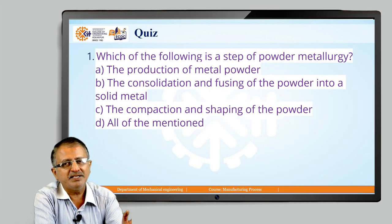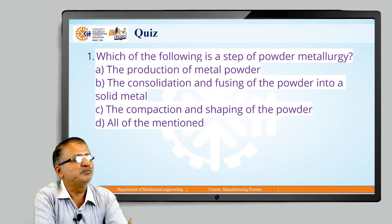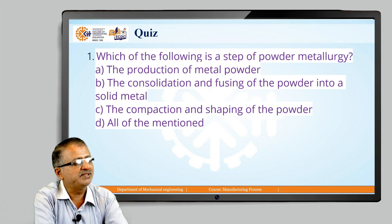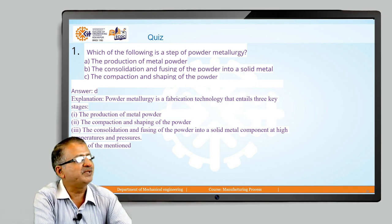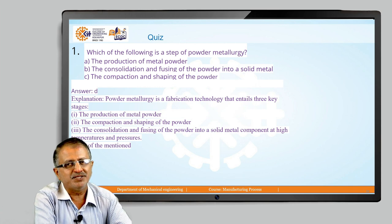Now let us check whether we precisely understood this lesson. The first quiz question is: which of the following is a step of powder metallurgy? Options are: production of metal powder; consolidation and fusing of metal powder into solid metal; compaction and shaping of the powder; or all of the mentioned. The answer is all of the mentioned, because production of metal powder, compaction and shaping, and consolidation and fusing are all stages of powder metallurgy.